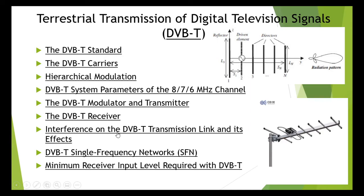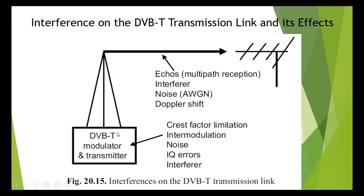Let us discuss about interference on the DVB-T transmission link and its effects. Look at diagram 15 — the terrestrial transmission paths. Terrestrial transmission paths are subject to numerous influences. Apart from additive white Gaussian noise, these are mainly the many echoes, that is multipath reception, which makes this type of transmission so very problematic.